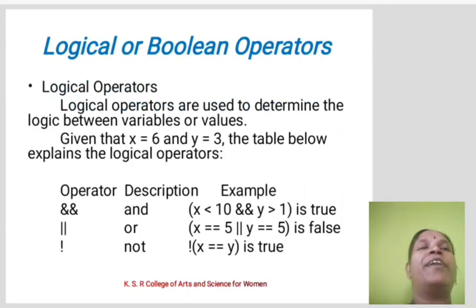Logical or Boolean operators. Logical operators are used to determine the logic between variables or values. Given x equals 6 and y equals 3, the table gives examples of the logical operators.